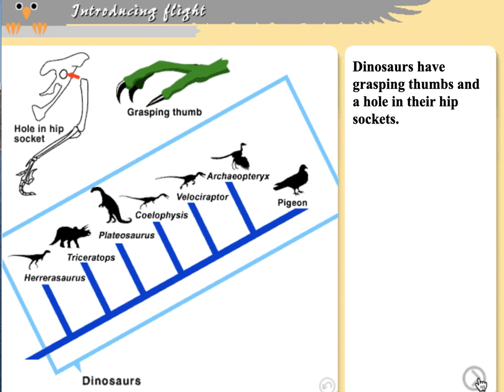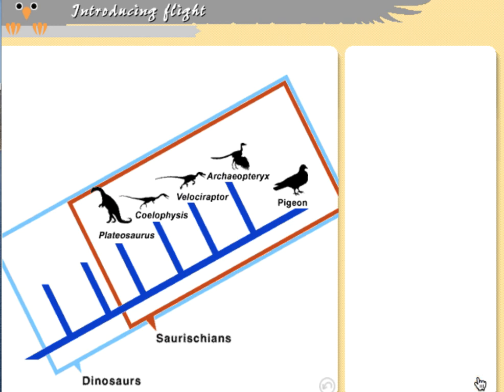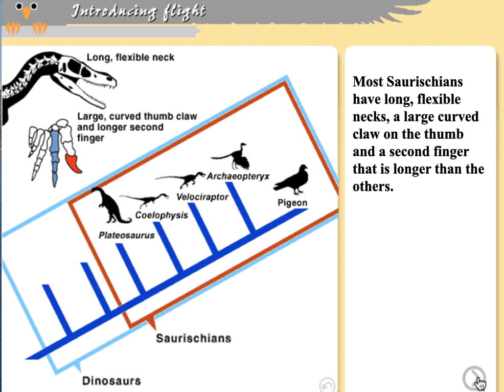Dinosaurs have a couple of key characteristics: a particular kind of hip with a hole in the hip socket, and a grasping thumb. There's quite a bit of variation in dinosaur hands, but these basics distinguish them from their other relatives. Excluding some dinosaurs, we get into the saurischian dinosaurs — the lizard-hipped dinosaurs — characterized by a long flexible neck, a longer second finger, and a curved thumb claw.